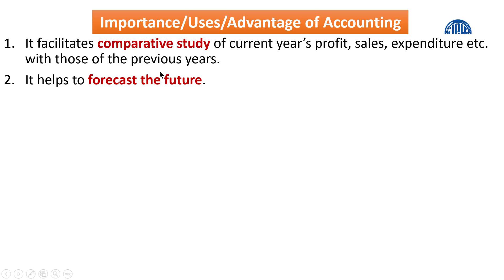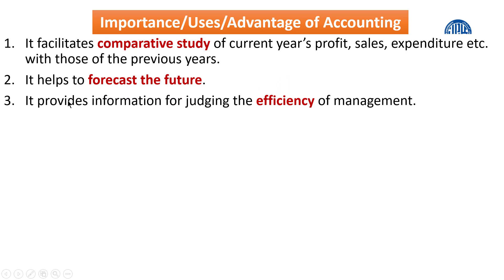For example, when a bank wants to provide a loan to someone, it first checks the past background — whether the person has defaulted with previous lenders. If there is no default, the bank may provide the loan. The third advantage is that accounting information helps in judging the efficiency of management — whether the management team was efficient, effective, and achieved the business goals in the last year.